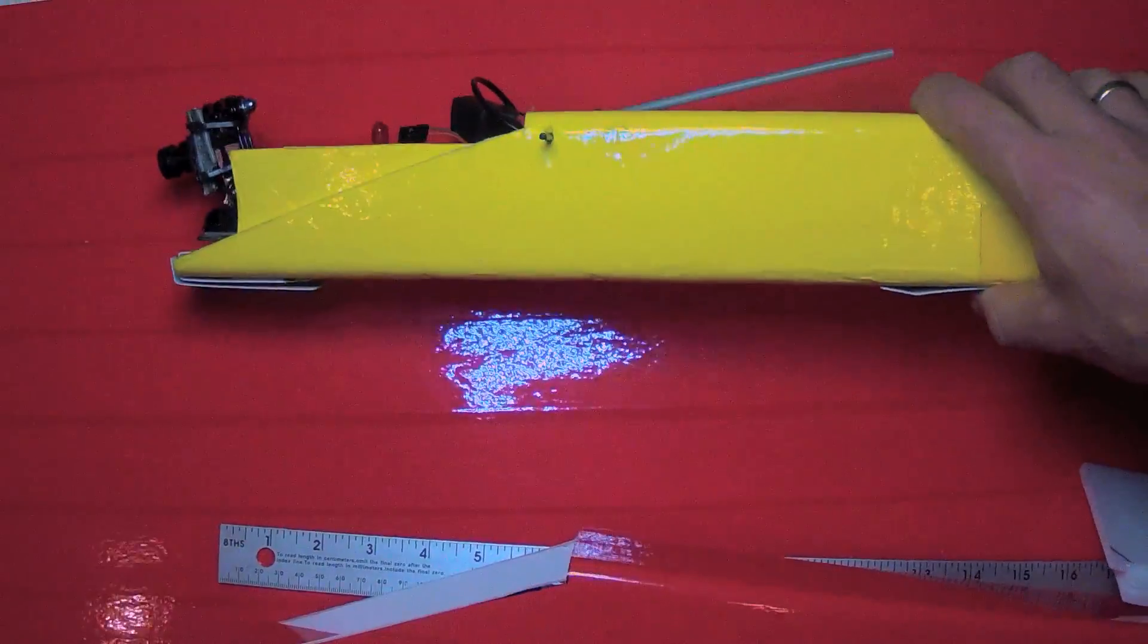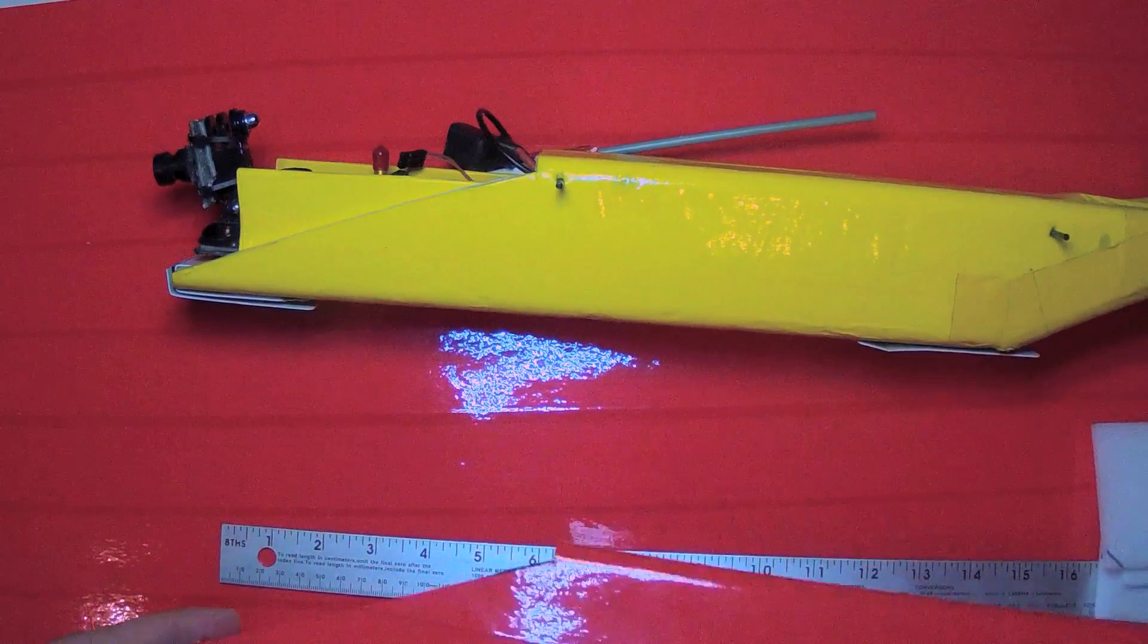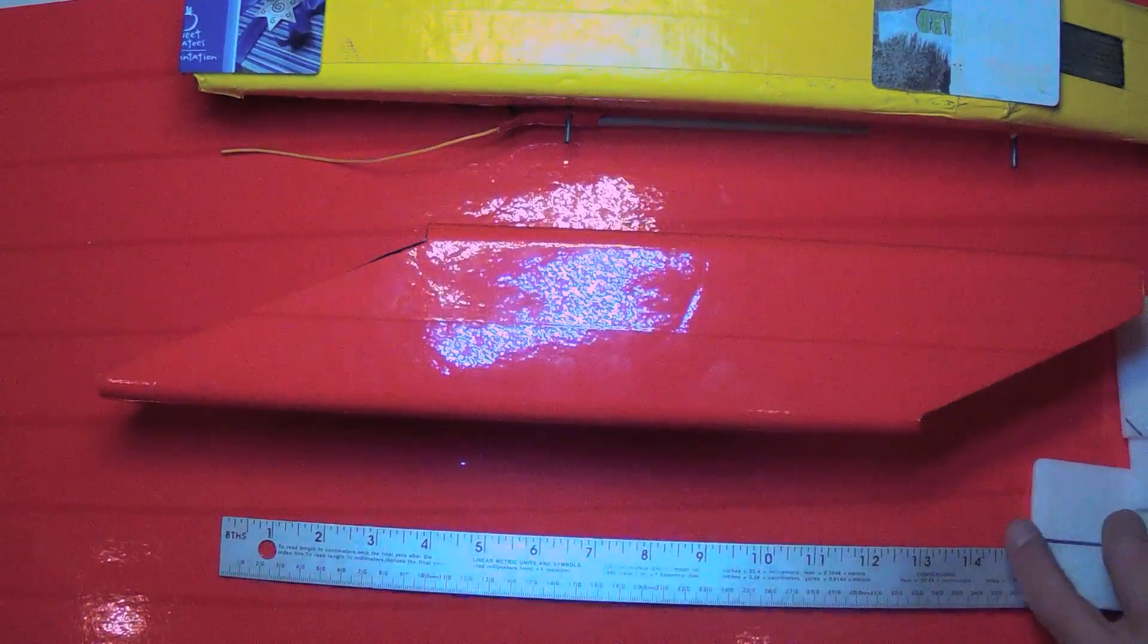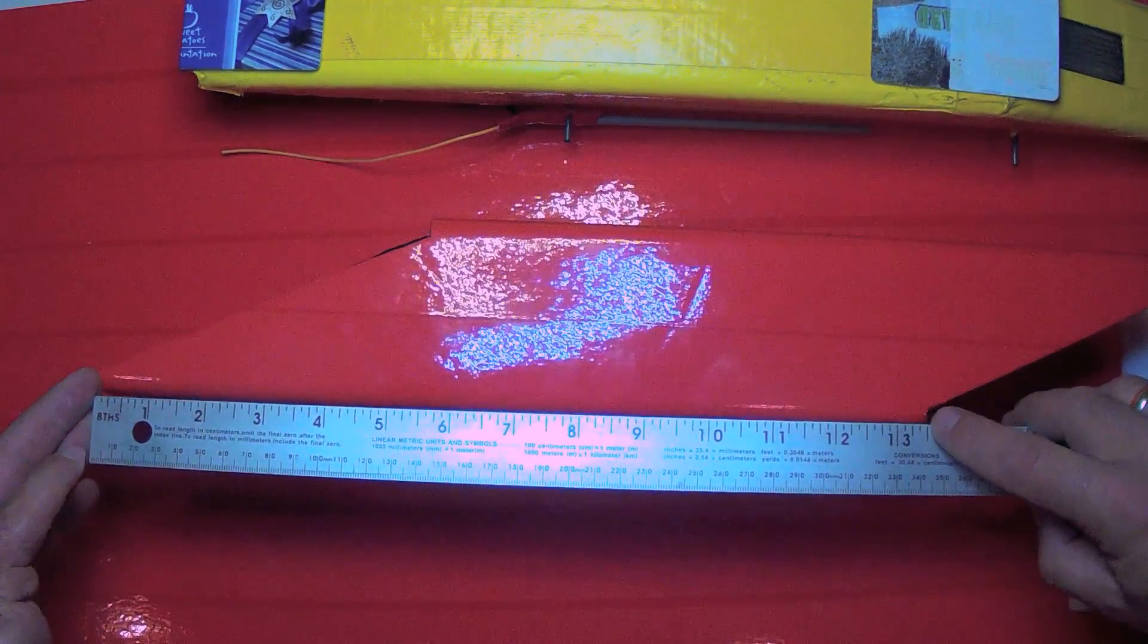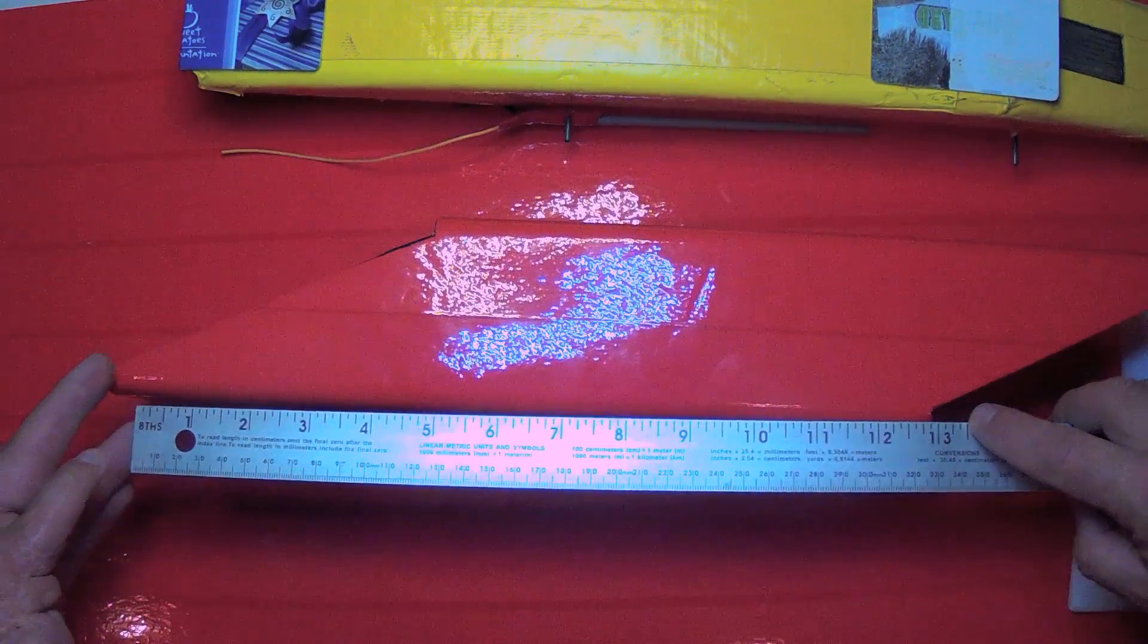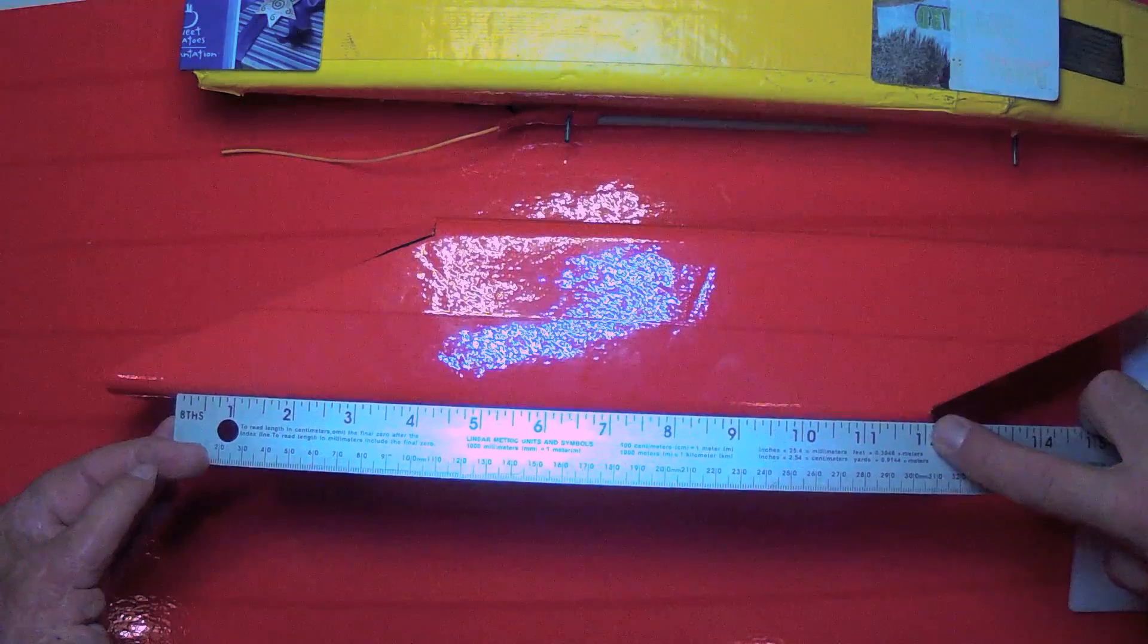So there's a lot of options here, but in any case, for this fuselage, I'm going to make the tray 13 inches, minus an inch, 12 inches long.